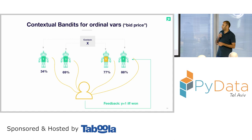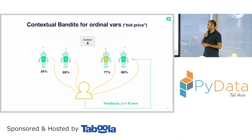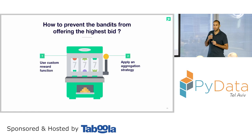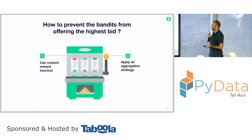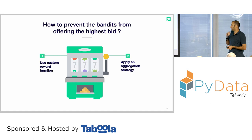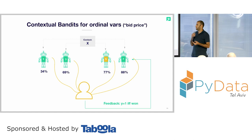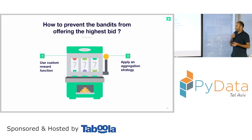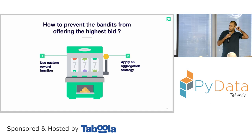Nothing prevents the model from bidding the highest price every time. If we won with $7, nothing prevents using $7 again and again, and that's something critical. If we keep bidding the highest price, we'll exhaust our budget very fast. Method one for preventing this is using a custom reward function, and method two is applying an aggregation strategy.